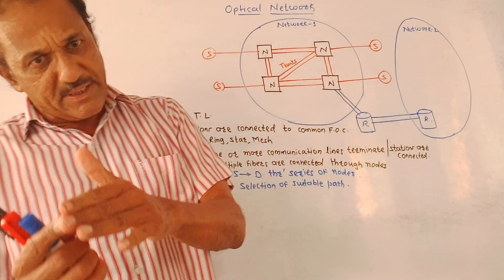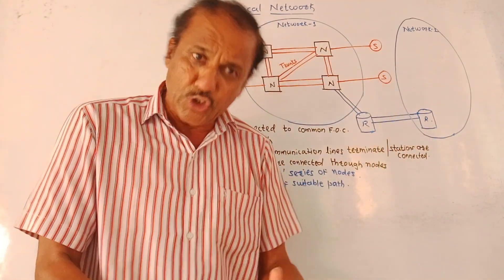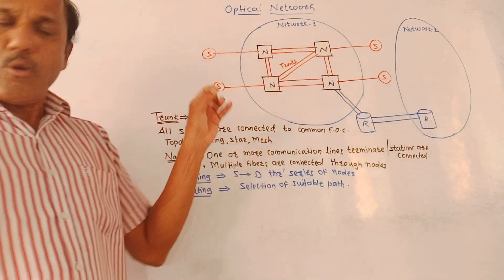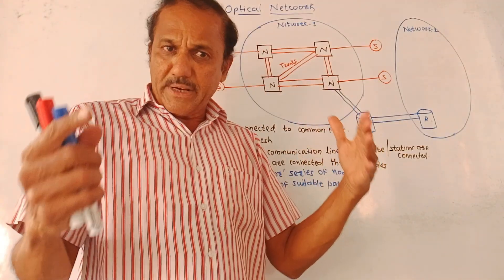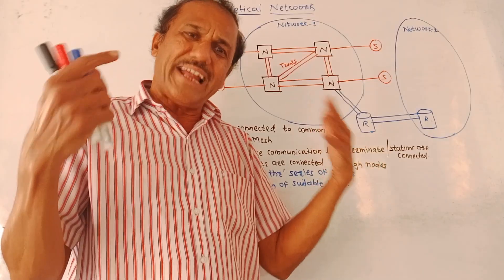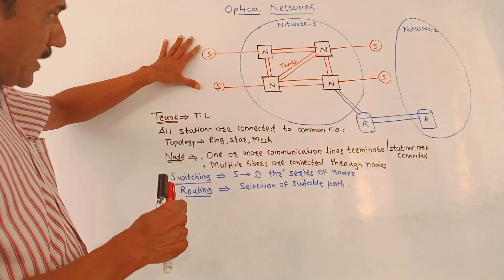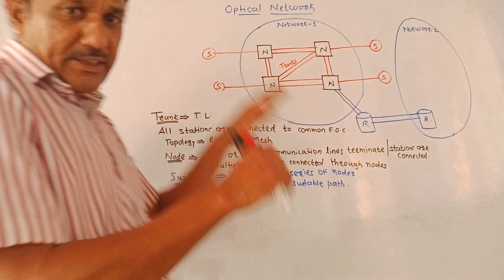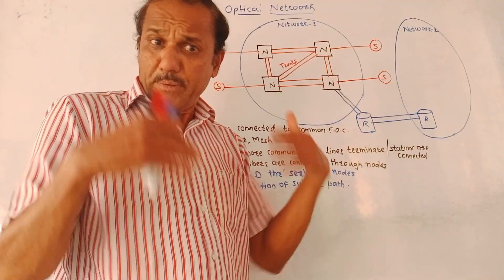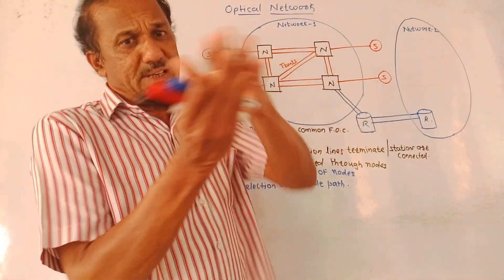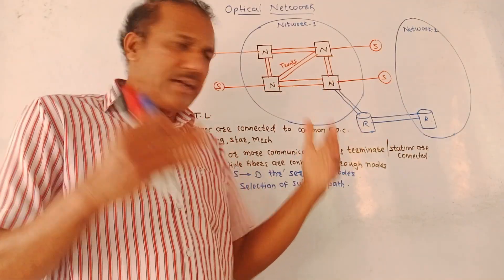A receiving station is a destination where data or information is received. Since this is an optical network, transmission of data and signal takes place in the form of light rays through the optical cable. The station can be a laptop or a computer used to transmit or receive signals, and similar types of devices can be connected.